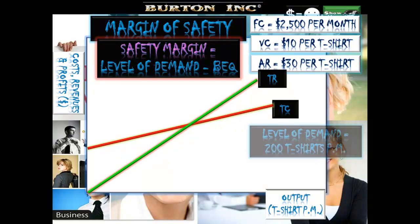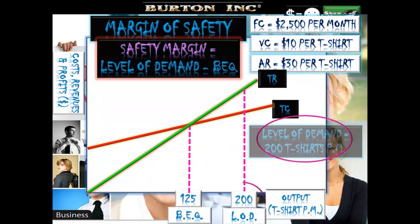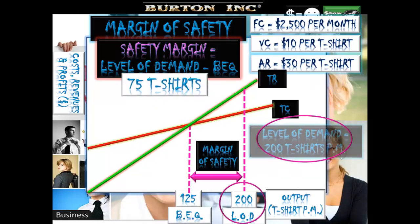Back to margin of safety on the chart: margin of safety is the level of demand (200 t-shirts per month) less the breakeven quantity (125). That's a margin of safety of 75 t-shirts. On the chart, show a bi-directional arrow between the level of demand and the breakeven quantity, labeled 'margin of safety,' and perform the calculation as well.